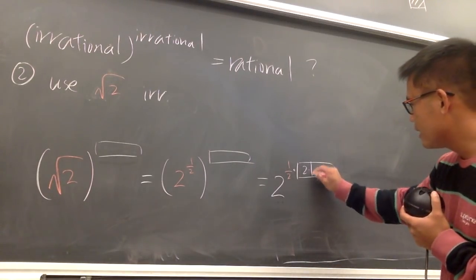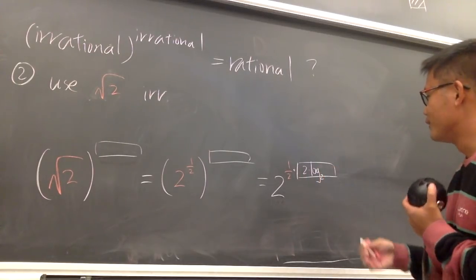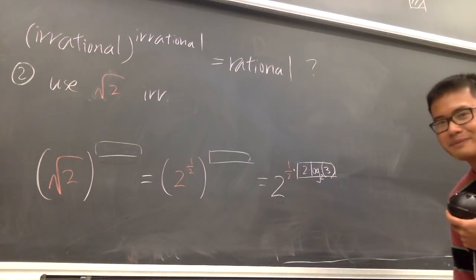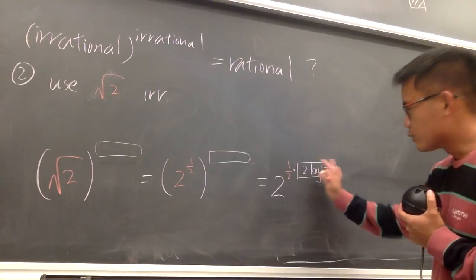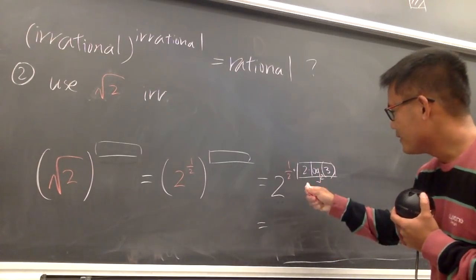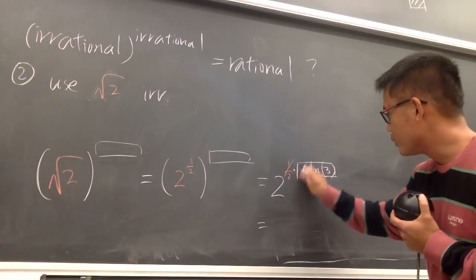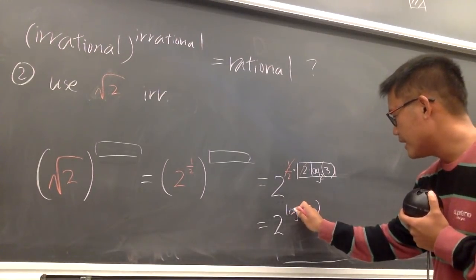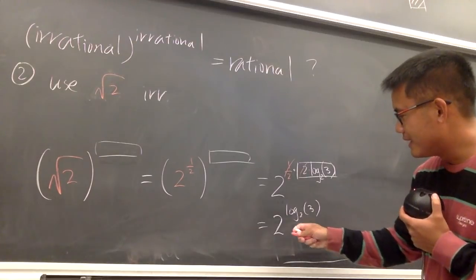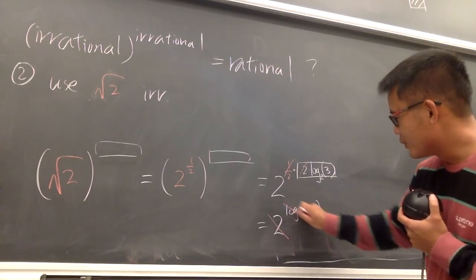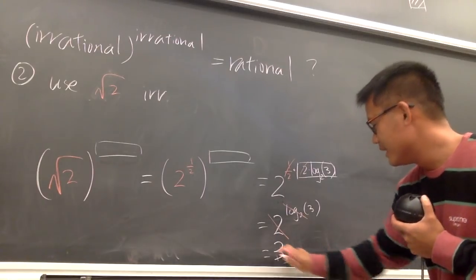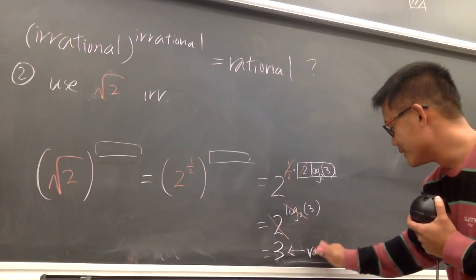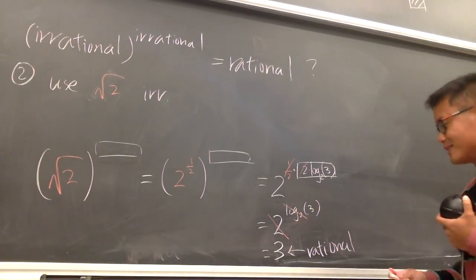Why don't I put down log base 2 of 3? Then, multiplying 1/2 and 2 will cancel, and you have 2 raised to log base 2 of 3. The base of the exponential — this 2 — and log base 2 cancel. At the end, you end up with 3. And 3 is of course rational. So we are done!